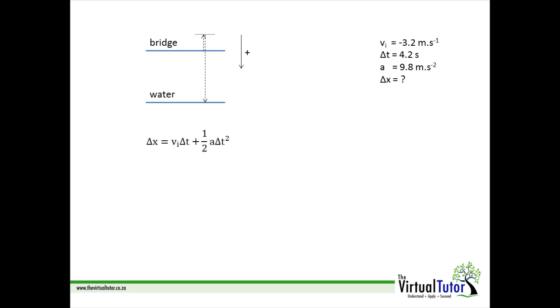Remember, the displacement of the rock from the bridge to the water is how high the bridge is. The displacement of the rock was 72 meters in the positive direction which is downwards. The bridge is therefore 72.00 meters high.